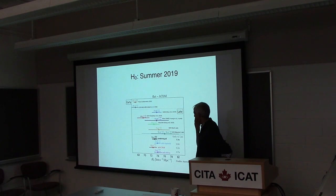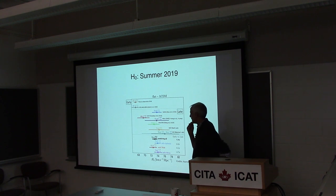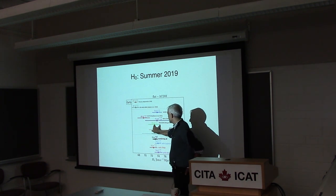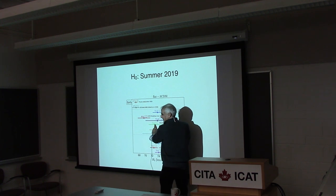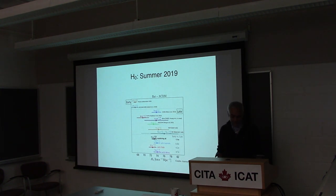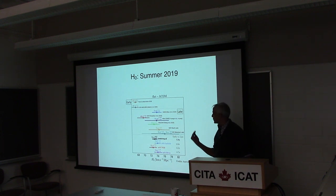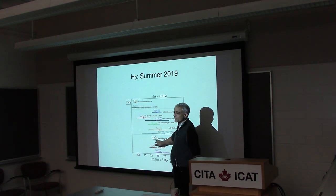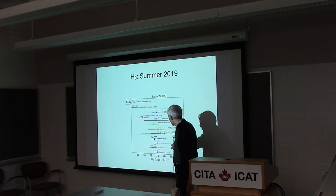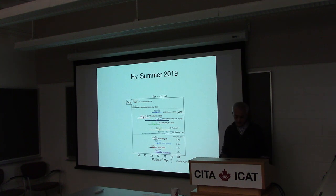A week or so ago, Chris Kochanek put out a very clear, simple paper about this issue. His claim is that there's a systematic uncertainty that's going to be exceedingly hard to reduce due to the mass sheet degeneracy. He claims you need really amazing futuristic data to reduce that uncertainty. But the current bottom line is it's definitely more than 4 sigma now — a possible crisis of the standard model of cosmology.